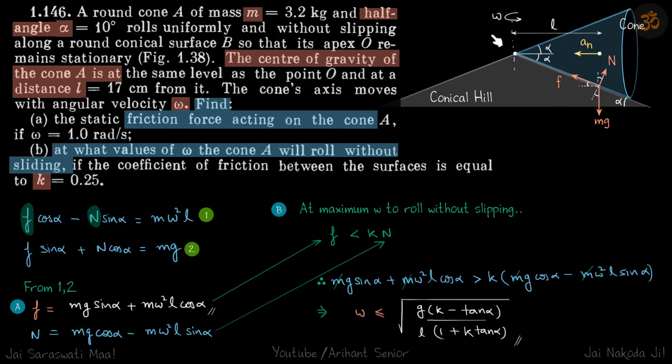We are given a cone that is rolling around this vertical axis on the surface of a conical hill. So the lateral surface of the conical hill is in touch with the lateral surface of the cone. It's given that this angle is alpha, the half angle of the cone is alpha, and therefore the angle of the hill is also alpha.